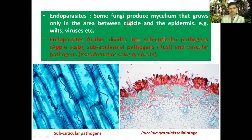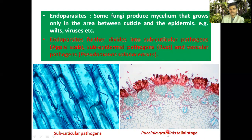Next is the endoparasite. Some fungi produce mycelium that grows only in the area between the cuticle and the epidermis. Endoparasites are further divided into subcuticular pathogens — for example, apple scab — and sub-epidermal pathogens, such as the rust pathogen Puccinia graminis. The telial stage of Puccinia graminis is restricted to the sub-epidermal area only, with no ramification in the remaining host tissue.